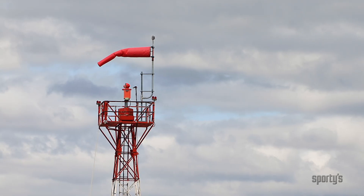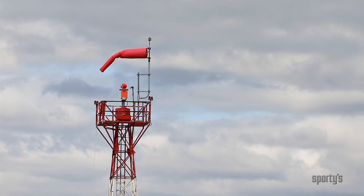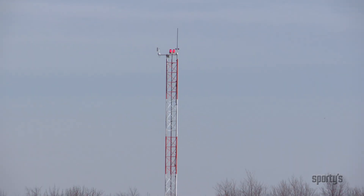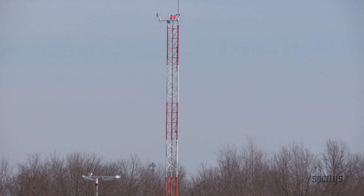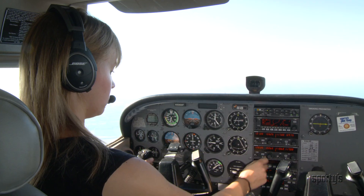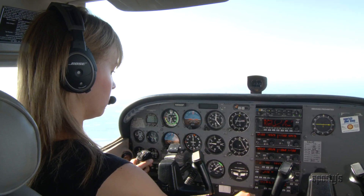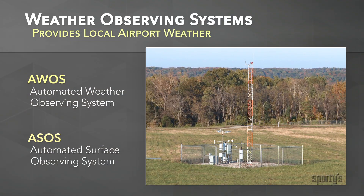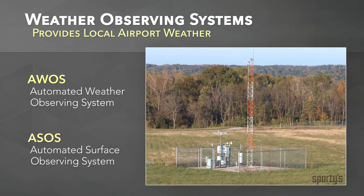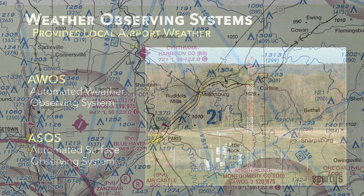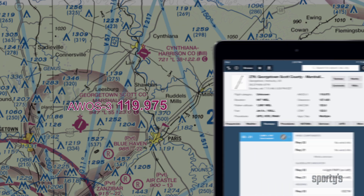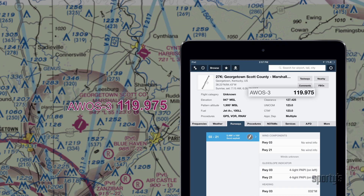By far the most common of the three is the wind sock, but you'll soon be able to discern what any of them are telling you. Many airports also offer an automated weather reporting system that broadcasts the current conditions over a dedicated radio frequency. Typically referred to as an AWOS or ASOS, these allow you to get an accurate report of wind speed and direction while many miles away from the airport. You'll find the AWOS and ASOS frequency printed right on the sectional and on the airport information page in mobile apps.